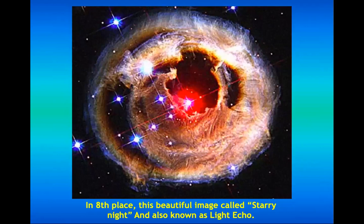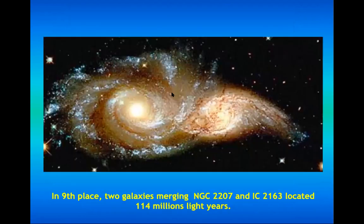In eighth place, this beautiful image called Starry Night, also known as Light Echo. It has some reflections of light that produce bright light, that's why it's called Light Echo. There's so much we don't know in outer space and astronomy — that's why it's very interesting. It makes us curious and want to know more about outside our planet.